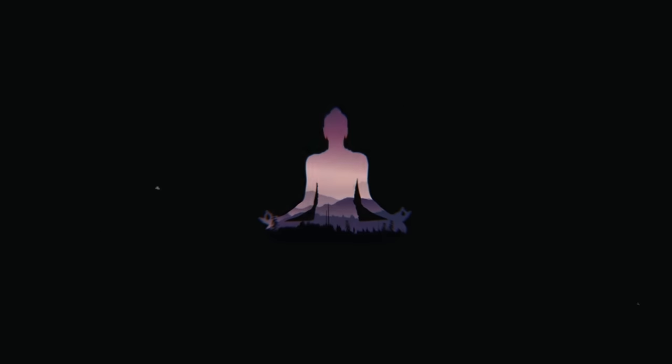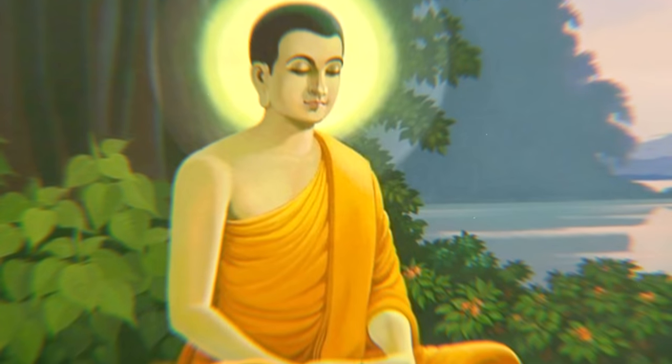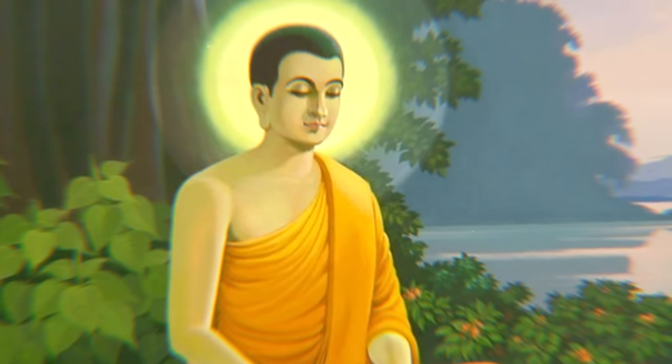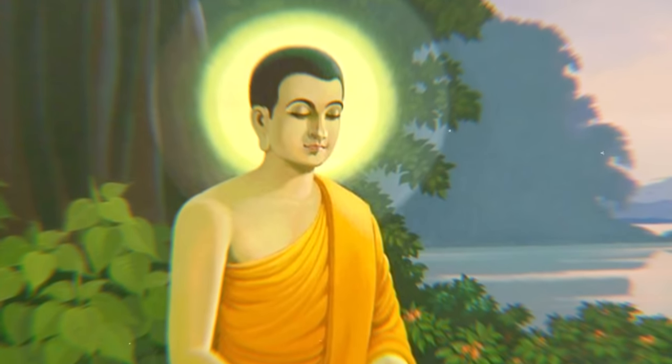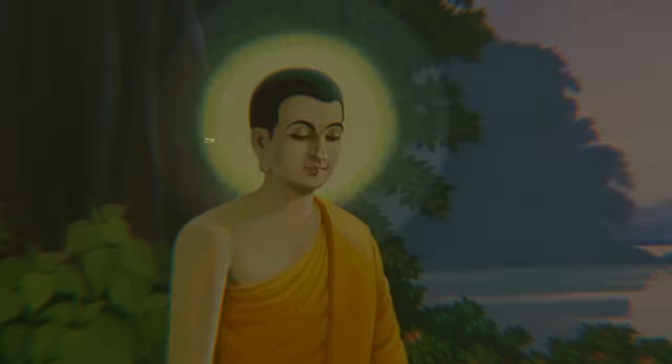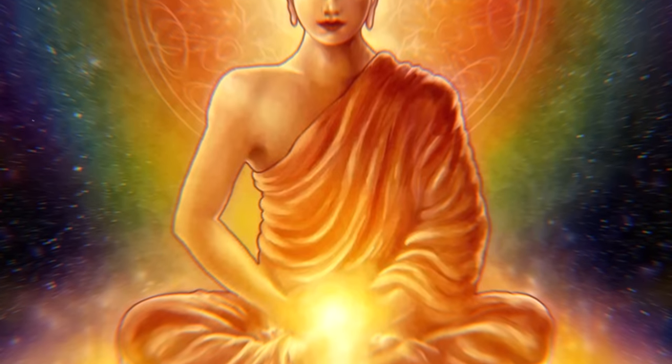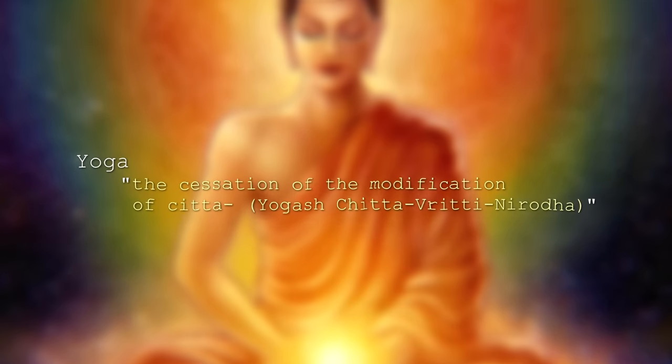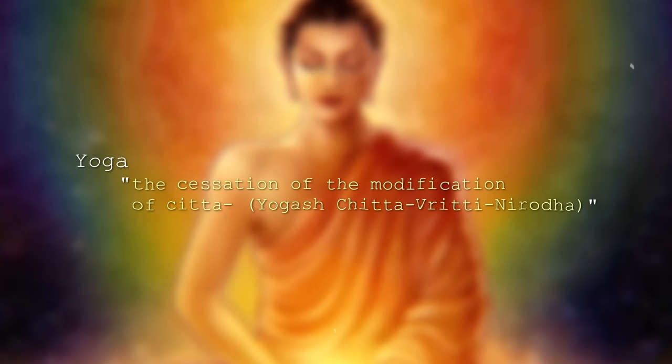When the knowledge of an object is attained, the self ceases to exist from the modification of Chitta. It is even detached from the association and aversion to worldly joys and pain. This attachment is nothing but bondage. To get rid of this bondage, human beings need to control the modifications of Chitta. One can control the modifications of Chitta only by practicing yoga continuously. In this regard, Patanjali defines yoga as the cessation of the modification of Chitta.